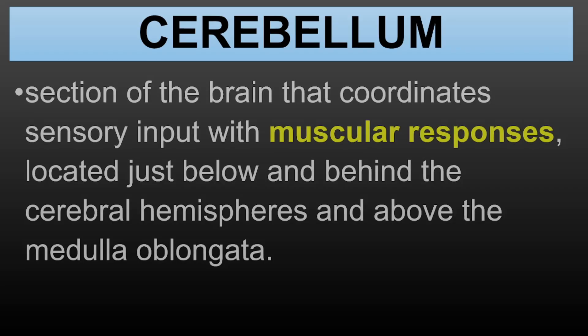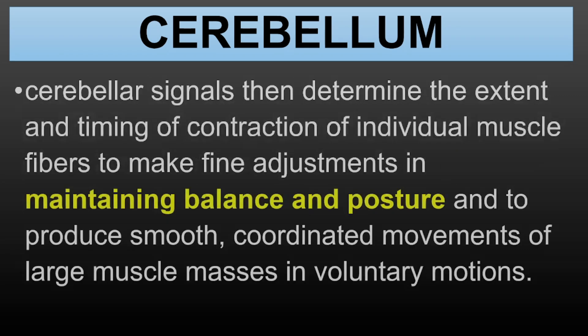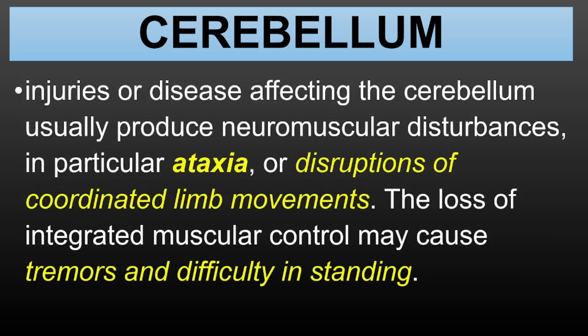The cerebellum coordinates movement and balance. When students learn how to ride a bike or play a sport, their cerebellum is at work. It helps them make smooth, coordinated movements. If this part of the brain is injured, it can cause issues with balance and coordination, making it difficult for people to move properly.